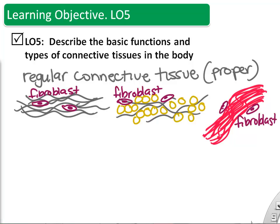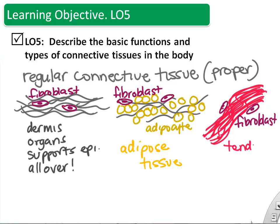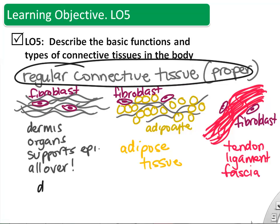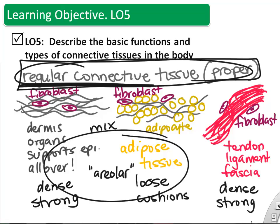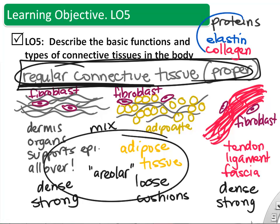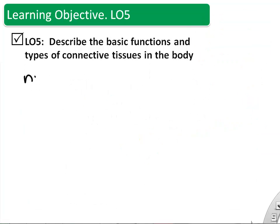Adipose tissue is actually a kind of connective tissue. The dermis and all those epithelial layers were supported by connective tissue. Tendons and ligaments are also regular connective tissue. Connective tissue can range from really dense and strong to more loose and cushiony, depending on how many fibers and adipocytes are present. The key things to remember are the protein networks like collagen and elastin, the fibroblast that builds them, and adipocytes that may be mixed in.